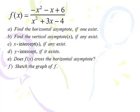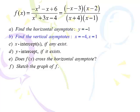Next function: f of x equals negative x squared minus x plus 6, over x squared plus 3x minus 4. Let's get the horizontal asymptote first — looks like a tie, so we go to the tiebreaker. The horizontal asymptote is y equals negative 1. Therefore we will be doing part E. We will not do part E if the horizontal asymptote is the x-axis, because we answer that in part C.